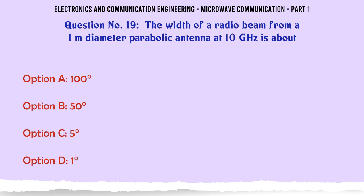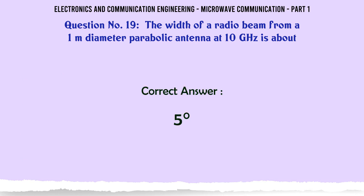The width of a radio beam from a 1M diameter parabolic antenna at 10 GHz is about: A. 100, B. 50, C. 5, D. 1. The correct answer is 1.